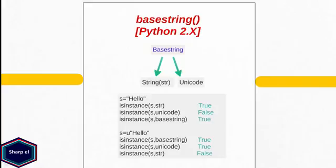In my example I am checking if string object 'hello' is an instance of class string, which is true. But string 'hello' is not an instance of the unicode class. Because both unicode and string classes inherit from basestring, string 'hello' is also an instance of basestring.